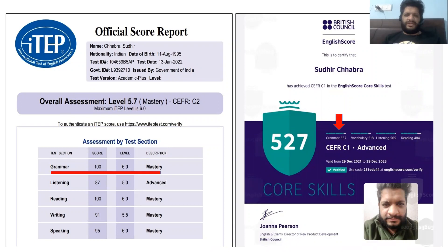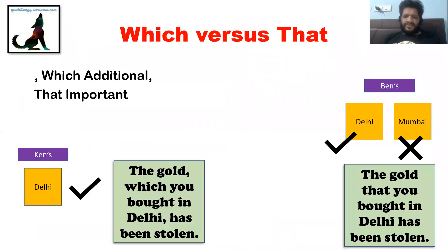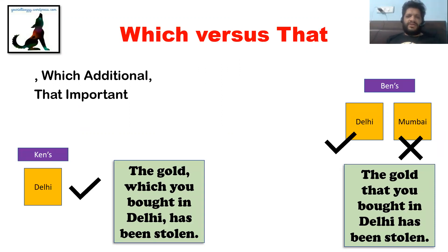Without much ado, I'll get straight to the topic. We'll continue the grammar lesson. Let's start with the difference between 'which' and 'that.' They are already pronounced differently from the way we use 'who,' 'whom,' and 'whose' for humans. We use 'which' and 'that,' and 'whose' or 'of which,' for non-living things or other aspects.